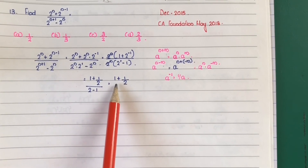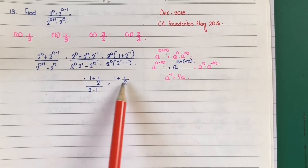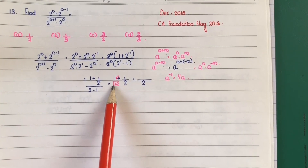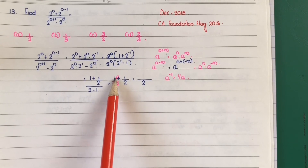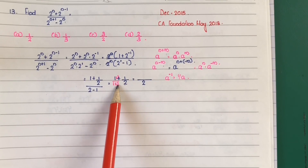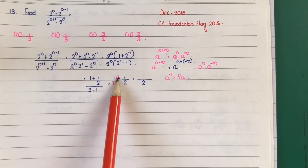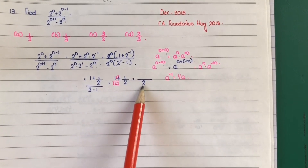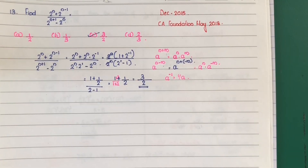Next step, LCM is equal to 2. Since 1 is same as 1 by 1, we multiply numerator and denominator by 2. So 1 into 2 gives 2, plus 1 gives 3. That is 3 by 2. The answer is option C.